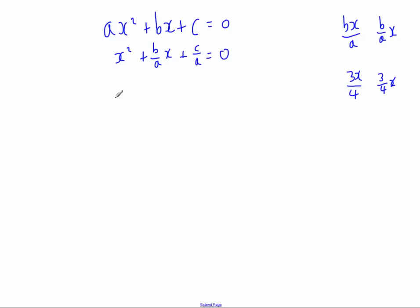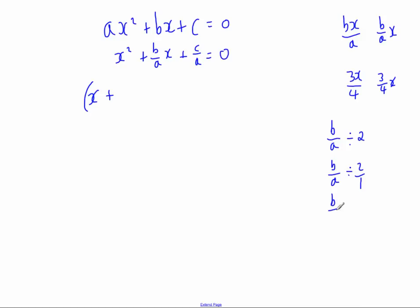Next I'm going to do completing the square on this. I write x in the bracket plus, and then I half the coefficient of x — I'm halving b over a. Halving b over a is the same as dividing by 2, so that's b over a divided by 2 over 1. To divide by a fraction you keep, change, flip: b over a times one half gives b over 2a. So half of b over a is just b over 2a.